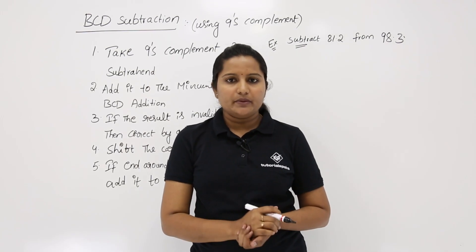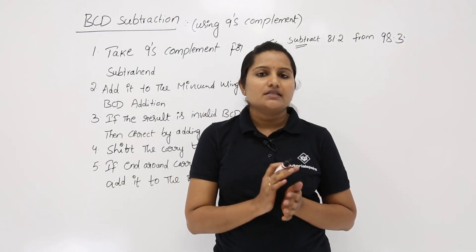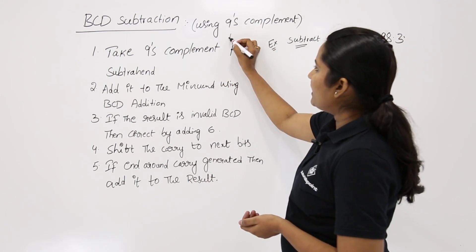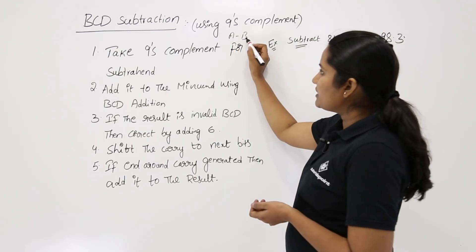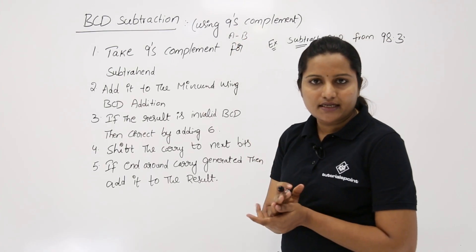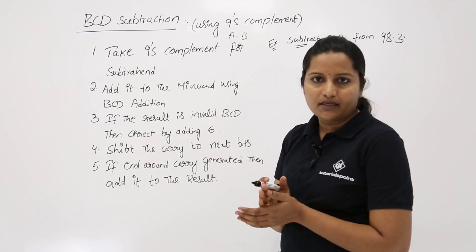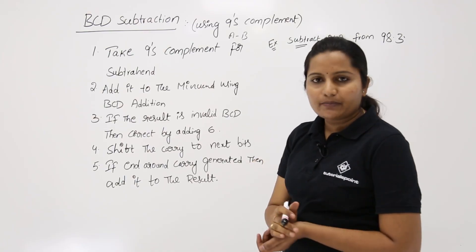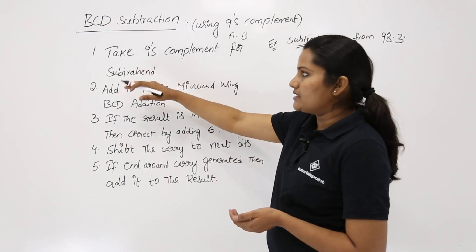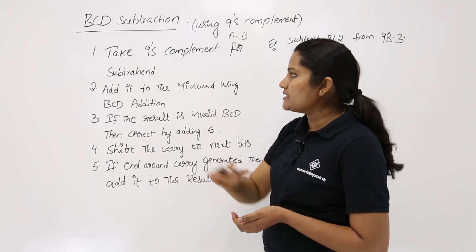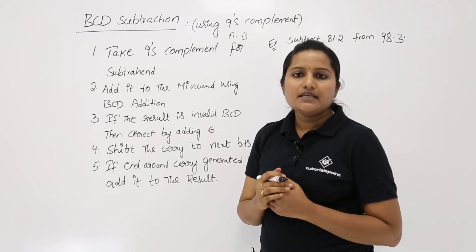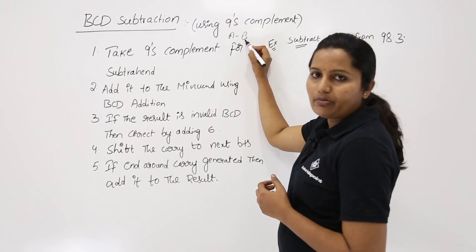In 9's complement subtraction of two BCD numbers we have to follow some steps. For example, if you are subtracting A minus B, B is said to be the subtrahend and A is the minuend. If A and B are two BCD numbers, the first step is to take the 9's complement of the subtrahend B.